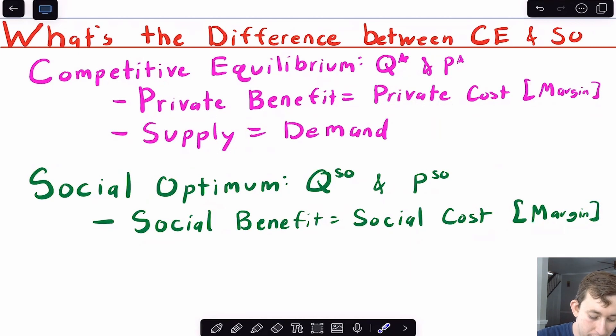But then when we moved on to socially optimum, we now need to think about the social benefit and the social cost. And so that's going to shift either the supply or demand curve up or down. And we use that new social cost or social demand curve in order to find our socially optimal quantity and our socially optimum price.